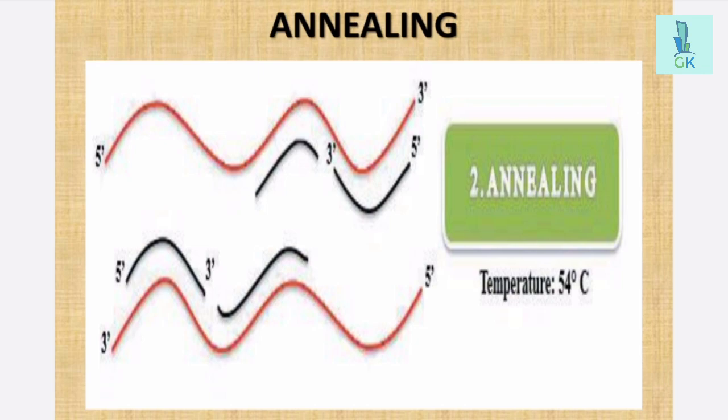In the process of annealing, requirements are RNA nucleotides and enzymes, and this step takes place at a lower temperature, much lower than denaturation. The temperature is about 50 to 60 degree centigrade. Normally 54 degree centigrade or 56 degree centigrade is the optimum temperature.